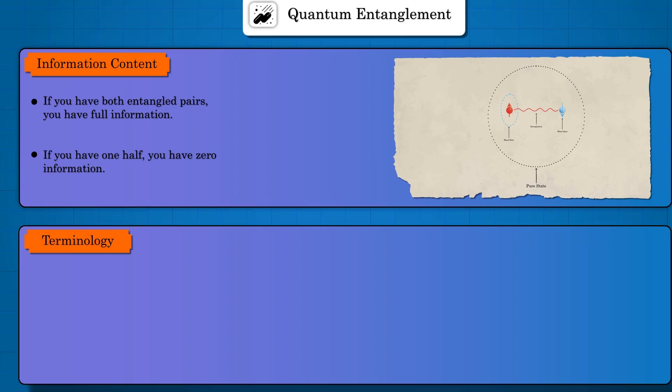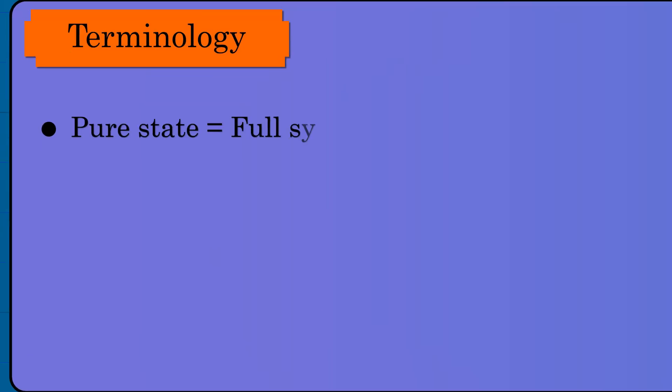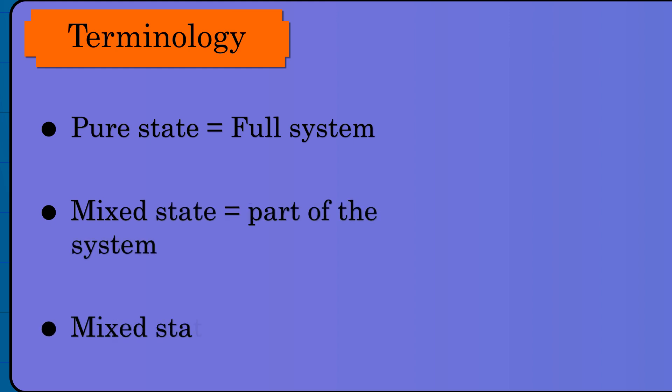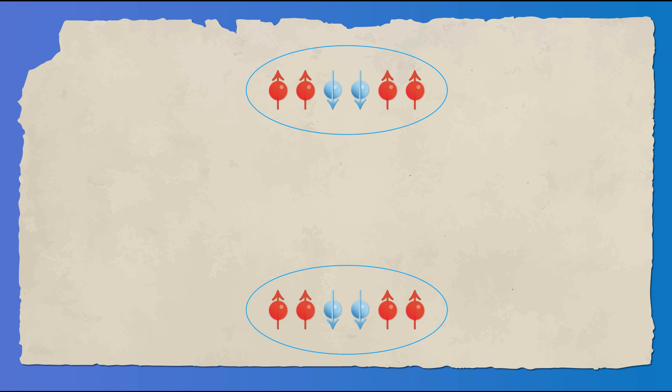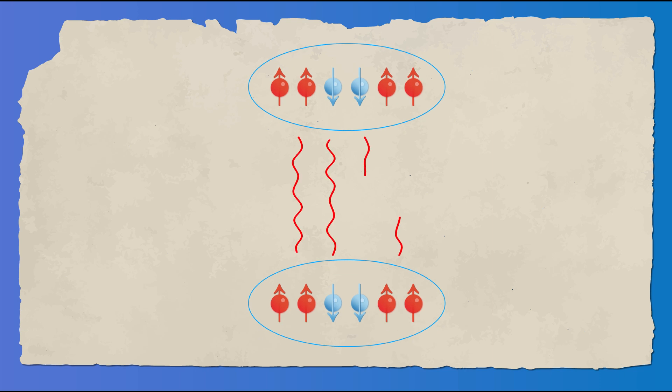It is called a mixed state when you only have access to a part of the total system. A mixed state is entangled with some other system. You can get no information out from a mixed state. This is because the mixed state has an equal probability of being in any state.